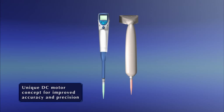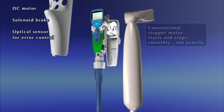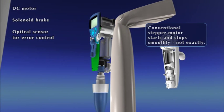E-Line is unbeatable in accuracy and precision thanks to the patented DC motor concept developed by BioHit. The concept includes the DC motor, the solenoid brake, and the optical sensor.